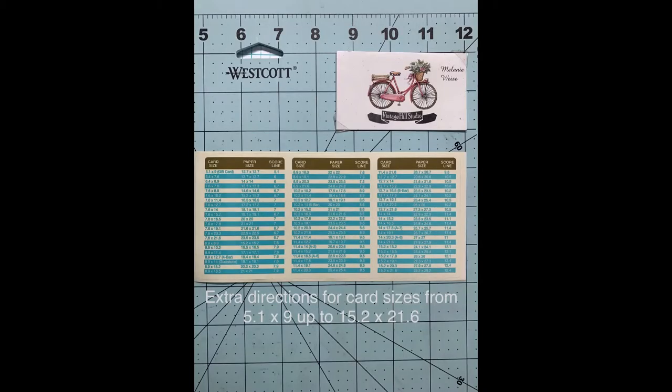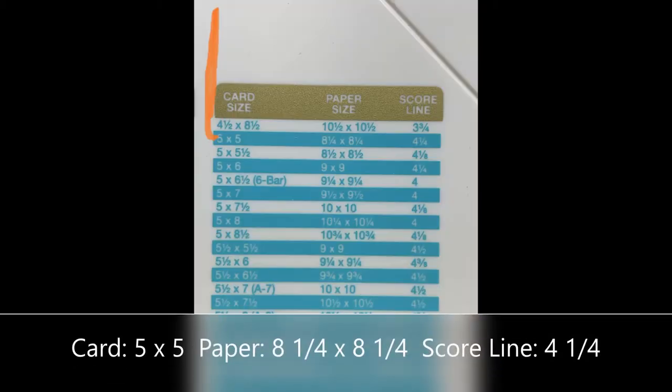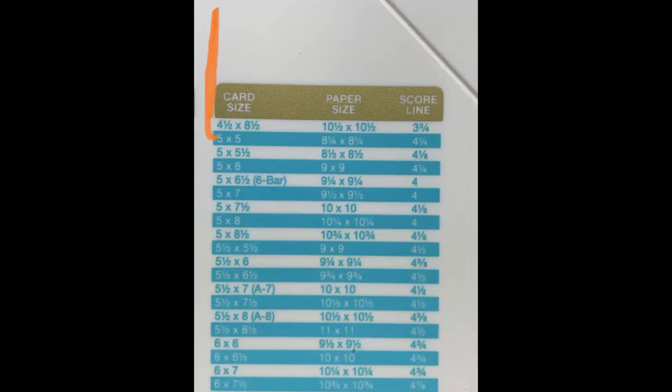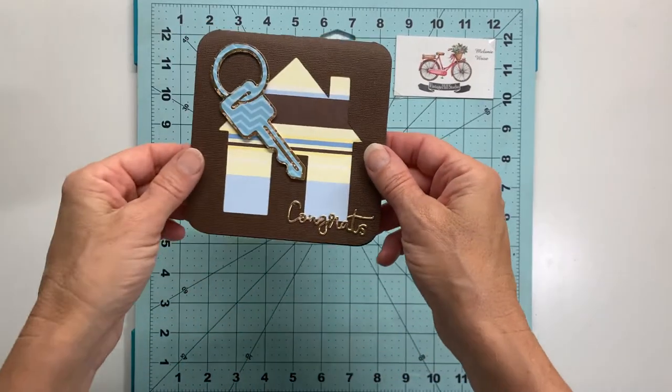It also includes a little extra directions for cards in centimeters. In my case for the five by five you can see the paper size and the score lines that I'll be working with. So let's get started.